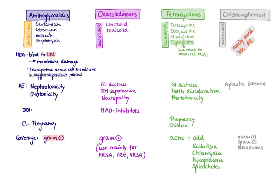The next class of drugs are the oxazolidinones. Representatives include linezolid and some newer ones like tedizolid. These are, as predicted, bacteriostatic. Adverse effects to remember are GI distress, which you'll see with most antibiotics, as well as bone marrow suppression and neuropathy.